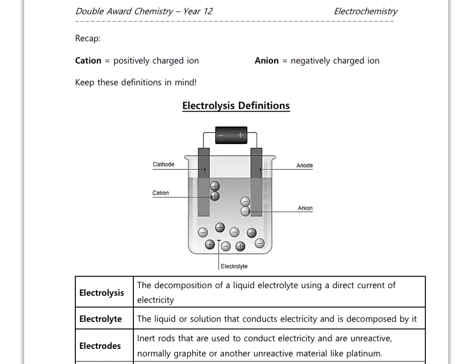Over on page two, we start with a couple of reminders of terms you would have met in Year 11. Cations are positively charged ions. Sometimes we remember that by thinking of the T as a positive sign in the middle of cation. Then we have anions, which are negatively charged ions. Sometimes we remember that by thinking of the N in anion meaning negative — N for negative. It's really important that you keep these definitions in mind with this topic.